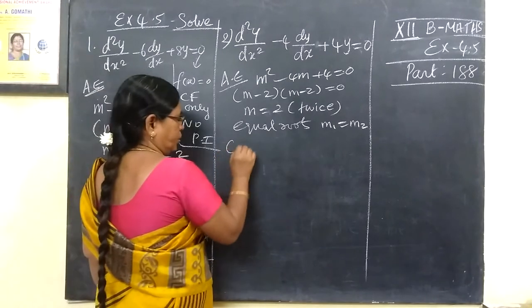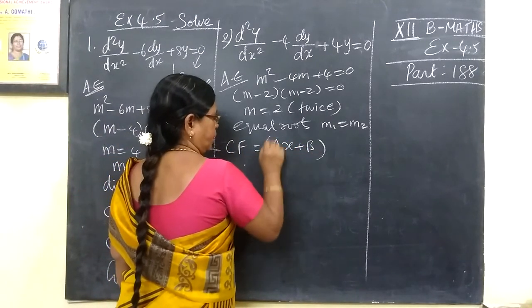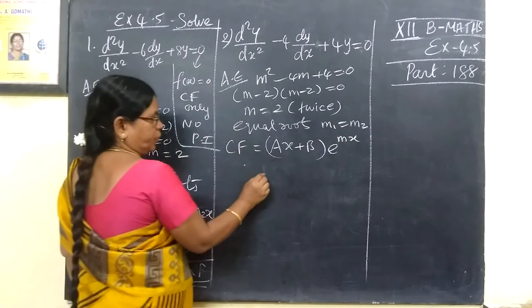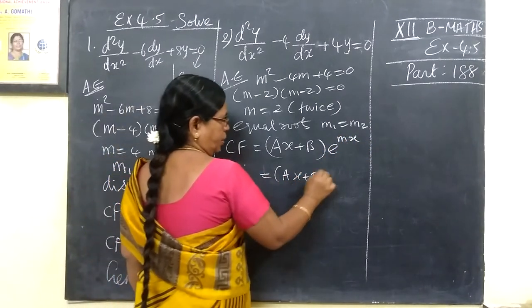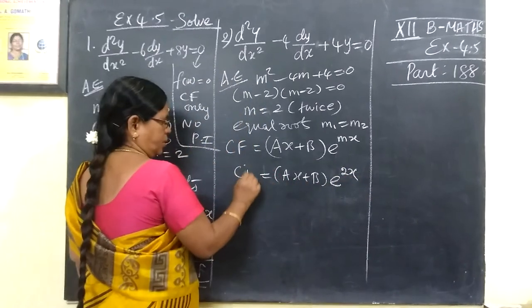CF equals (ax plus b) e power mx. This equals (ax plus b) e power 2x for equal roots.